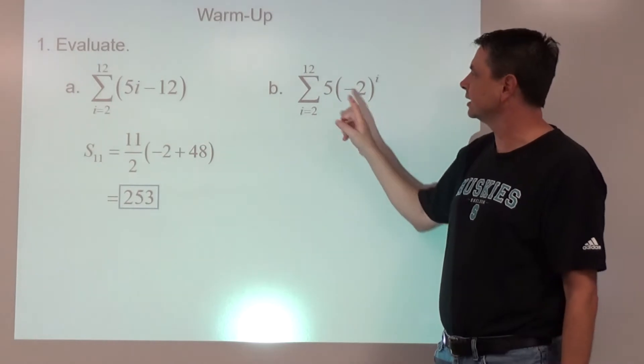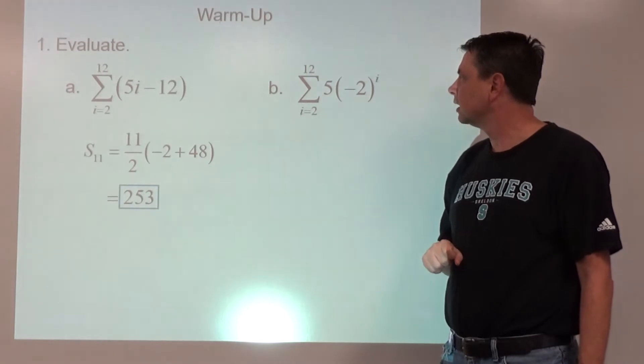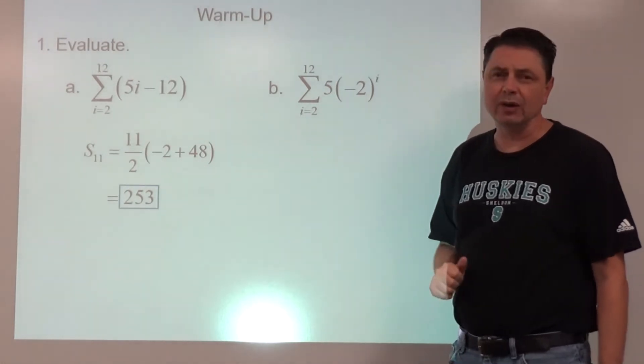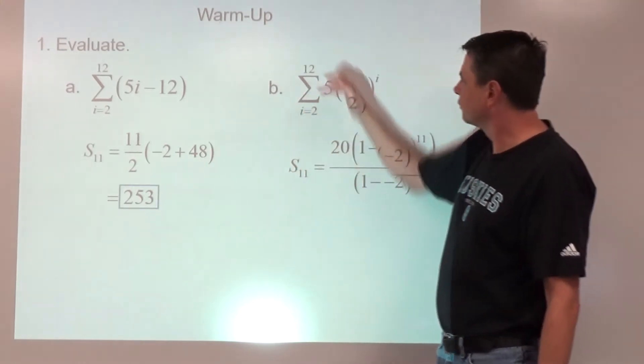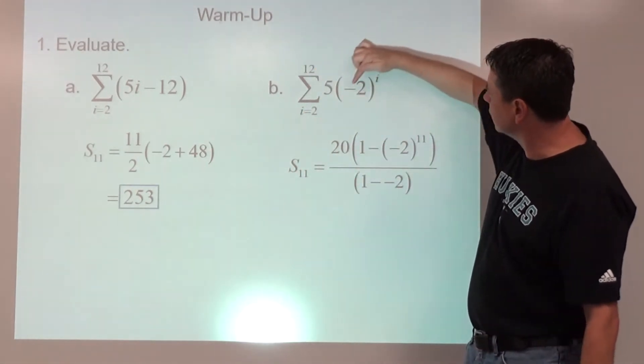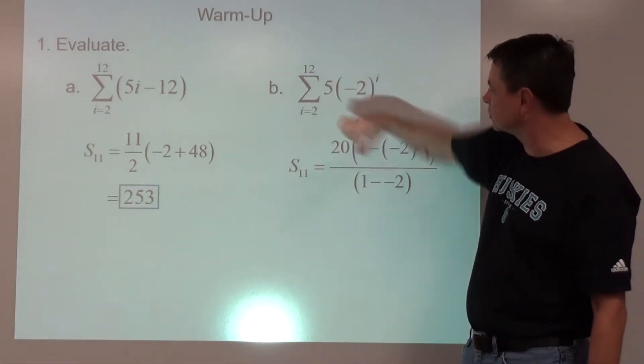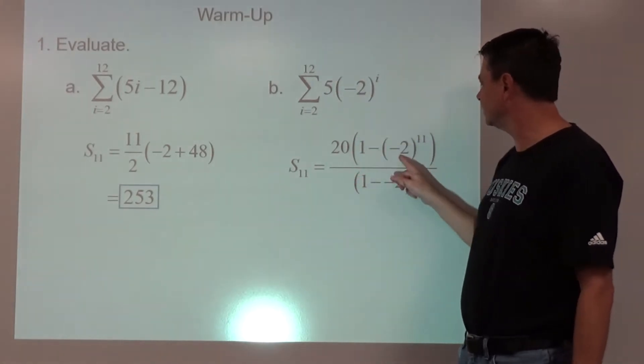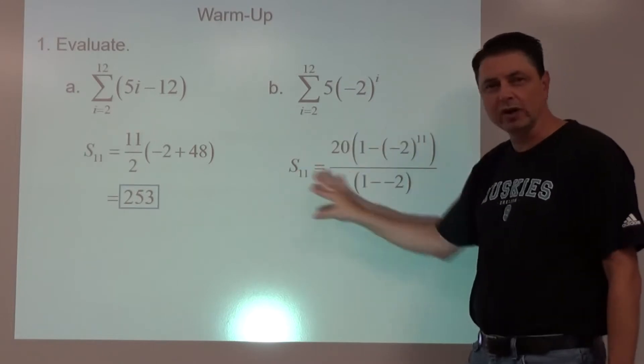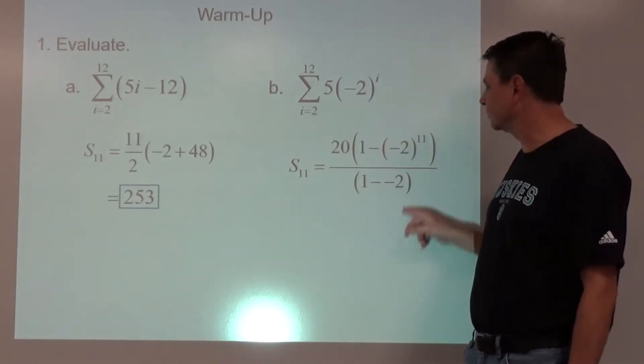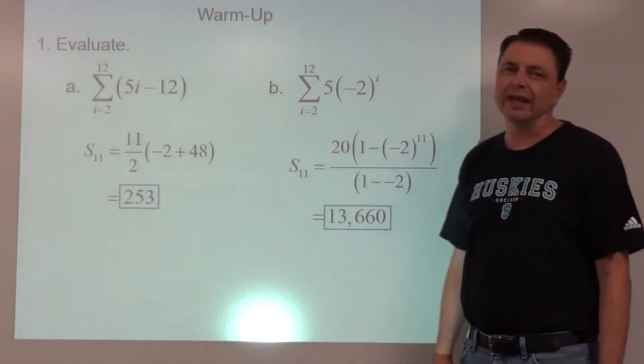Part B is geometric. It's an exponential expression, a times b to the power of x. So we're going to do that one as geometric. So S sub 11, again 11 things adding up. First one, plug in a 2, so negative 2 squared is 4 times 5. So our first term in this sequence is 20, times 1 minus negative 2 to the power of 11. Close parentheses, be real careful with your parentheses there. And then 1 minus negative 2, and we should get 13,660 for that sum.